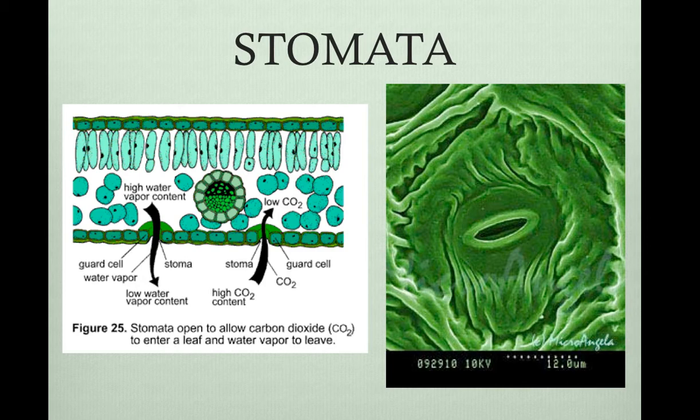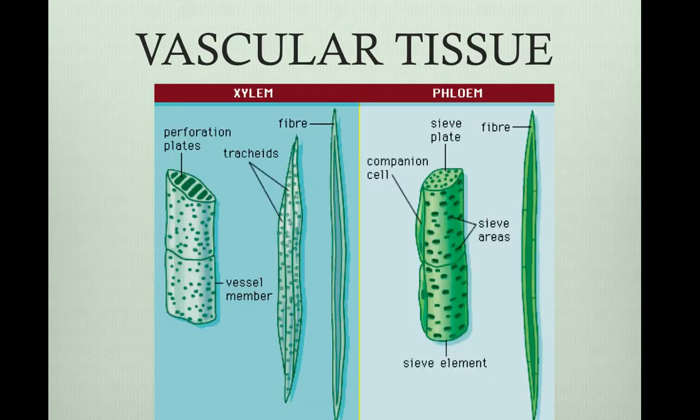There are two types of vascular tissues: the xylem and the phloem. The xylem are tube-shaped cells that carry water and minerals up from the roots. The cells of the xylem are dead. The phloem is made of living cells, and these are nutrient-conducting cells that distribute nutrients and other organic products throughout the plant.